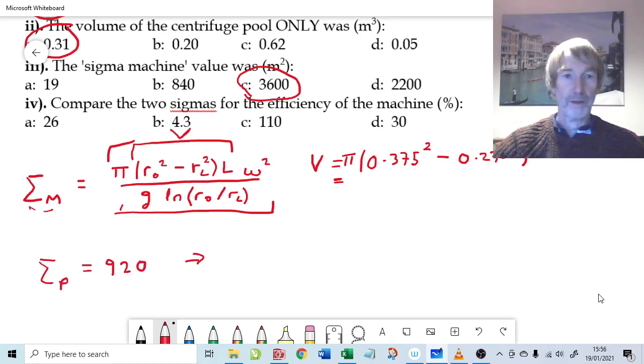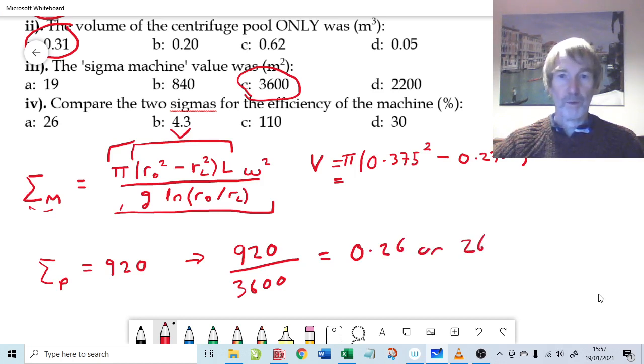So that means we're actually only getting in practice that efficiency, which means that we only have 920 divided by 3600. A machine that is around about 26 percent efficient, because that is 0.26 or 26 percent efficient. Which is not terribly efficient, but if you think about it, there's a lot of moving parts in a centrifuge which could cause recirculation zones and turbulence, and that means that the particles are less likely to be separated as we would desire onto the surface of the centrifuge basin. So that's 26 percent efficiency.